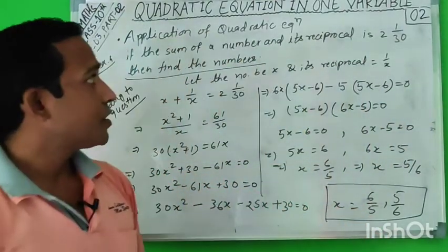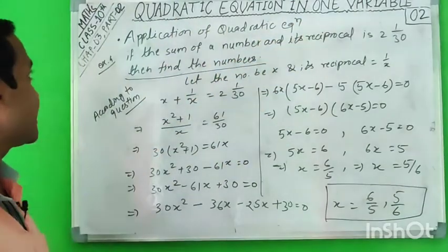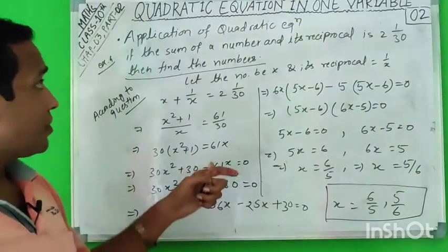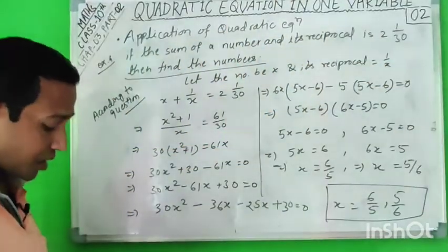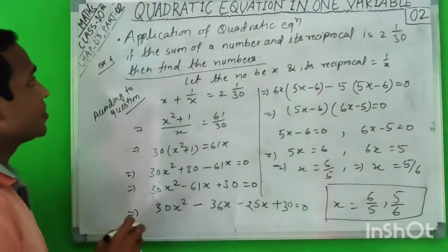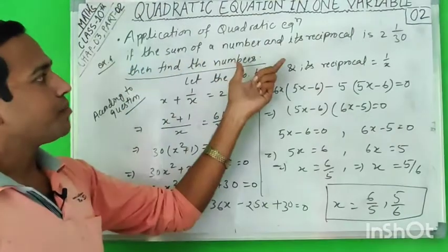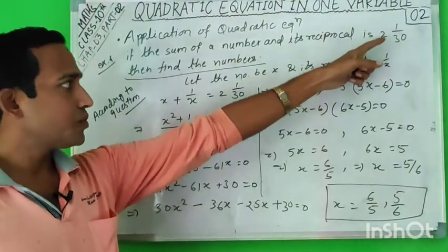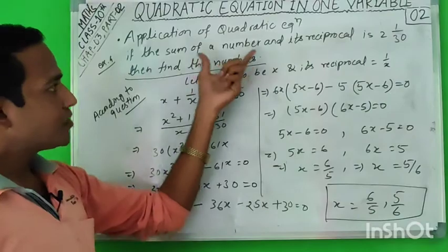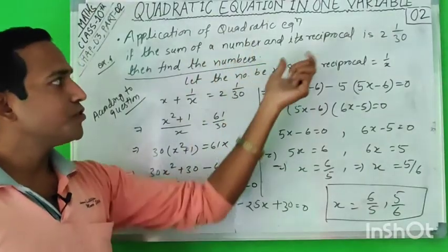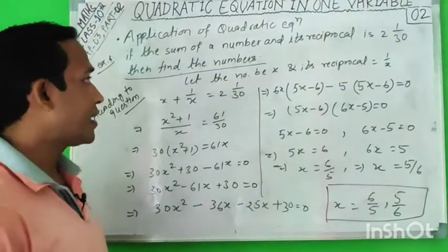Today we are going to cover whatever remains about quadratic equations in one variable. We have seen Part 1 and now we are going to Part 2. Here I have taken one example from your book on application of quadratic equations: if the sum of a number and its reciprocal is 2 and 1/3, then find the numbers. We need to find what those numbers are.